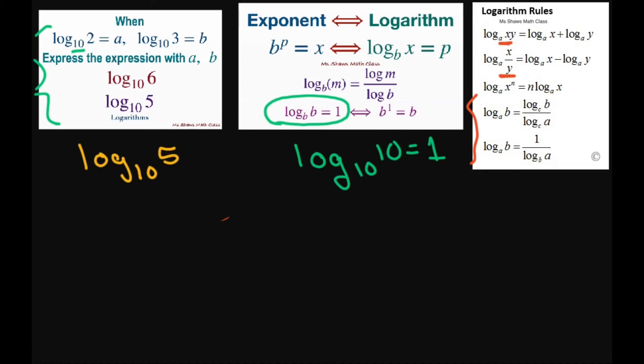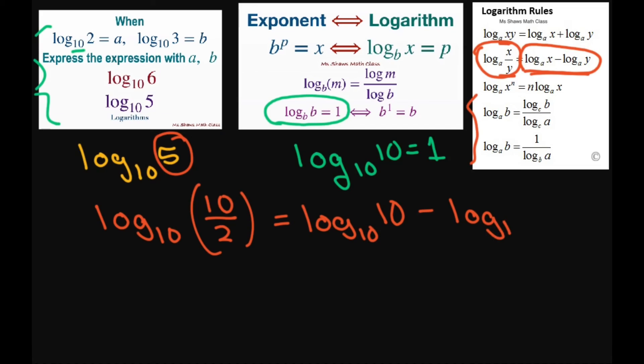So what I can do is write this as log base 10, and I'm going to put 10 divided by 2, because 10 divided by 2 gives me my 5. And then I'm going to expand it and write my logs as a difference of logs, because we have this form and we're going to expand it with a difference. So that's going to be log base 10 of 10 minus log base 10 of 2.